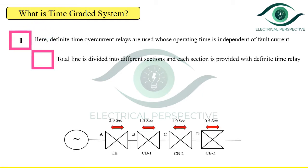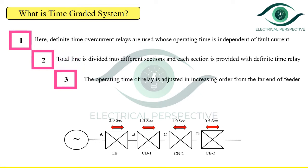We are going to see the application of the time graded protection system applied to a radial feeder, as shown in the figure. The main characteristic of the radial system is that power can flow only in one direction, that is from the generator or supply end to the load end. The total line is divided into different sections and each section is provided with a definite time relay.